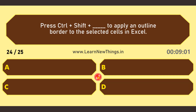Press CTRL+SHIFT to apply an outline border to the selected cells in Excel. CTRL+SHIFT+Ampersand.